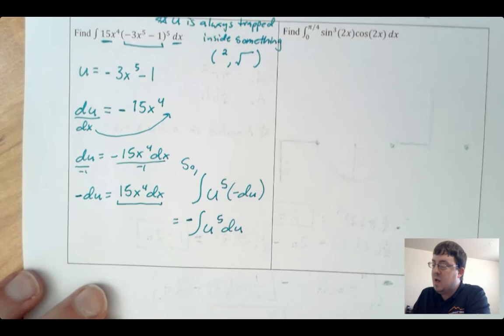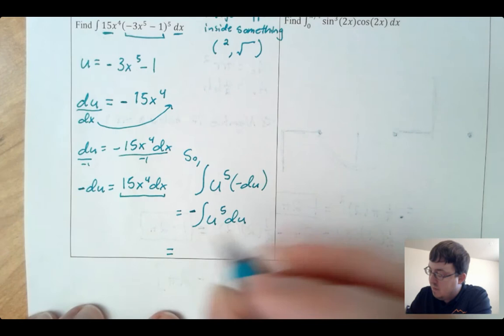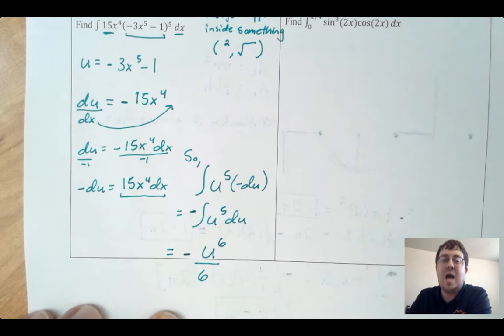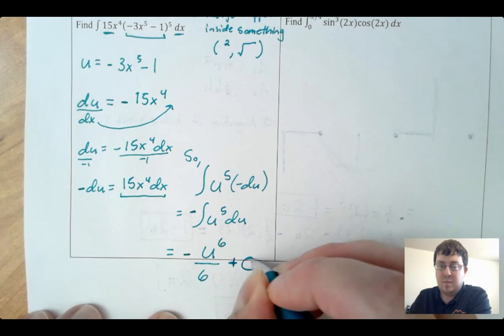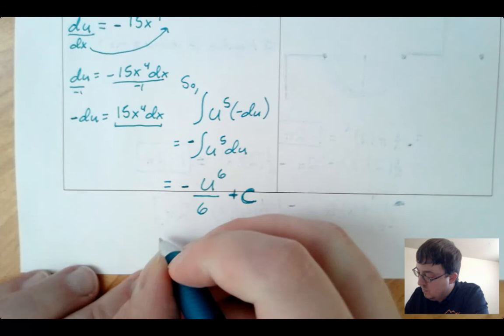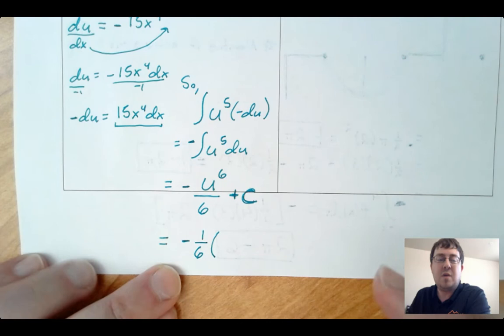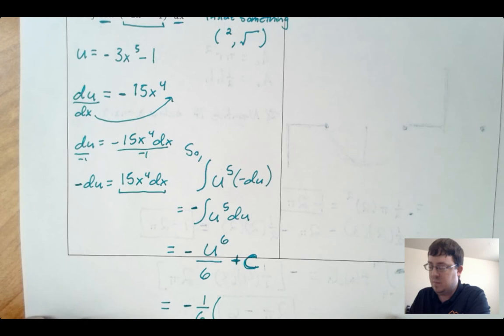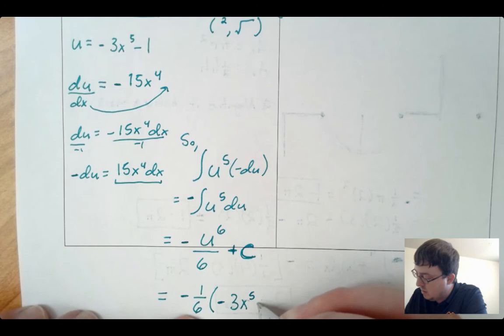This is a super easy integral using the power rule. Taking that negative along, I get negative u⁶ over 6 plus c. The last thing is to substitute back: our u was negative 3x⁵ minus 1. So the final answer is negative (1/6)(negative 3x⁵ minus 1)⁶ plus c.